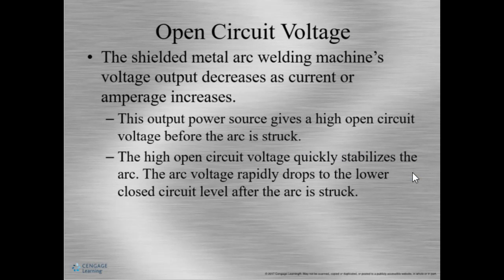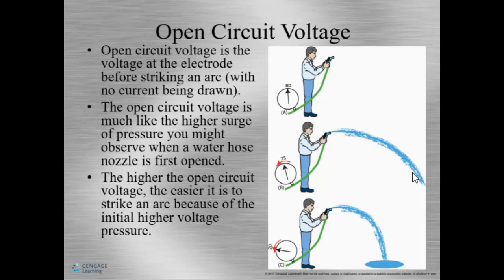Open circuit voltage — let's talk about an SMAW machine. We know that voltage drops when amperage increases, so this gives a high open circuit voltage before an arc is struck, and having a high open circuit voltage stabilizes the arc. Once the arc is struck, the voltage will dramatically drop — this is a closed circuit. Open circuit voltage means the machine is on, your electrode is ready to go, but the arc has not been struck yet. There's a surge of pressure when the arc is struck, and that pressure is voltage, which makes it easier to strike the arc.